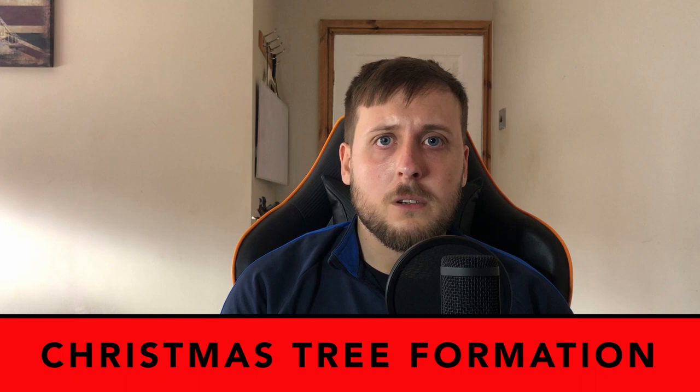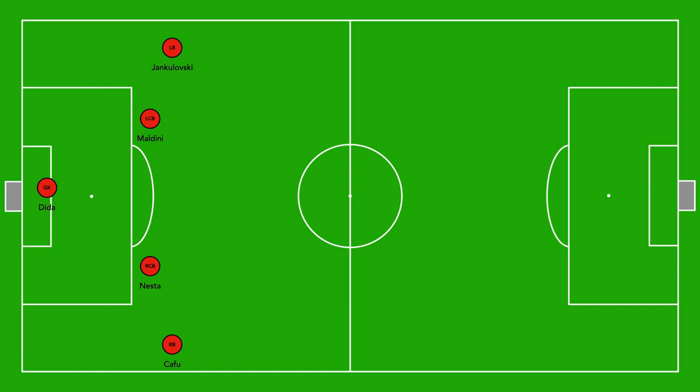The defensive unit of this AC Milan team looked pretty much like any back four, with a goalkeeper, two centre-backs, and two full-backs. The full-backs did rotate a lot, but we'll use these two as our reference going forward. Moving into the midfield, the unit consisted of two lines: an initial line of three central midfield players, and then a line in front with two attacking midfield players. The final line — the attacking unit — had one striker.